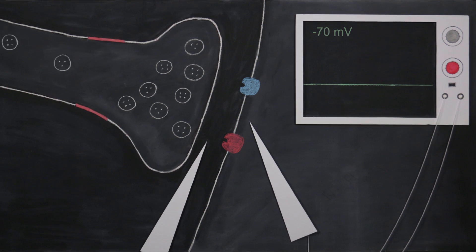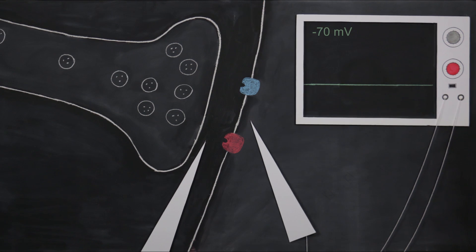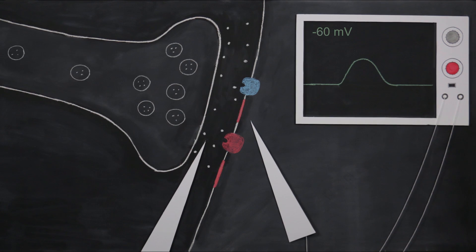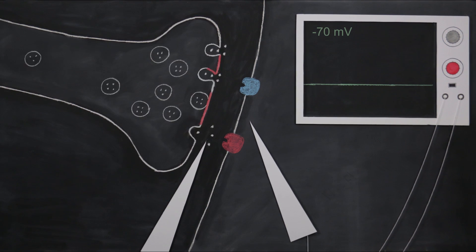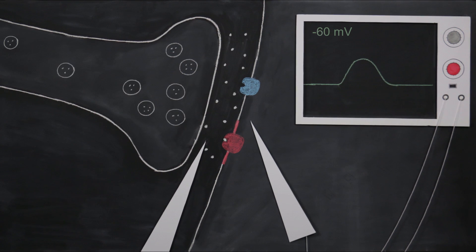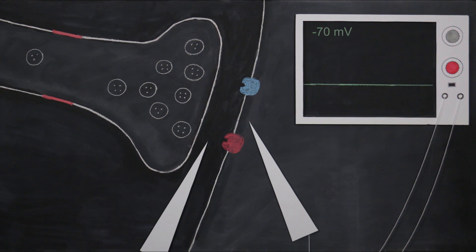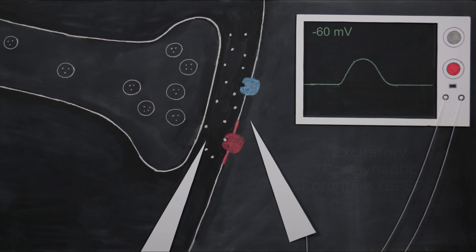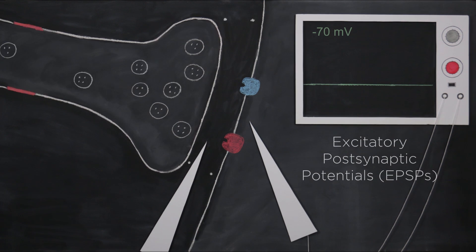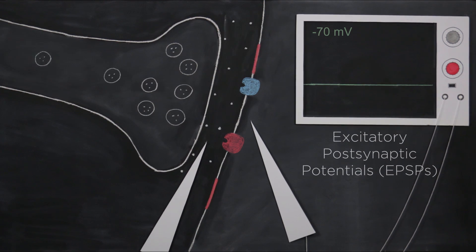The second possible effect that a neurotransmitter might have when it binds to a postsynaptic receptor is to depolarize the receptive membrane. That is, decreasing the polarization of the membrane potential. We can see this depolarization as an upward deflection on the oscilloscope. Postsynaptic depolarizations are called excitatory postsynaptic potentials, or EPSPs, because they increase the likelihood that the neuron will fire an action potential.